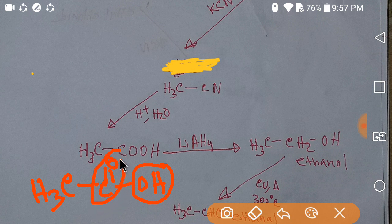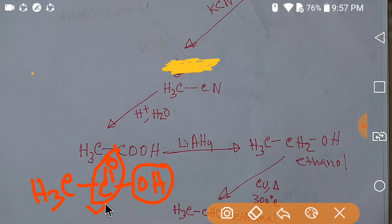When you reduce this ethanoic acid with lithium aluminium hydride (LiAlH₄), the carbonyl group is converted to a CH₂OH group, and you get ethanol.